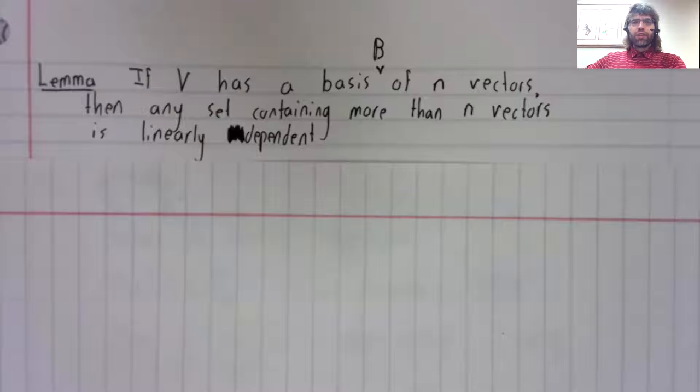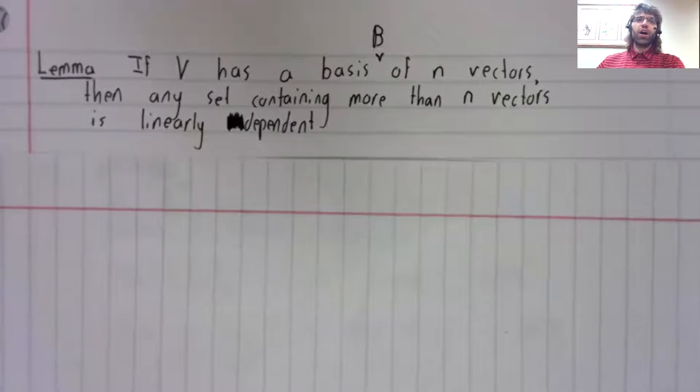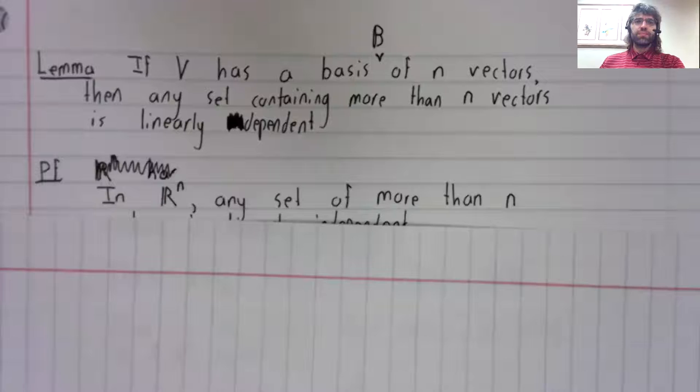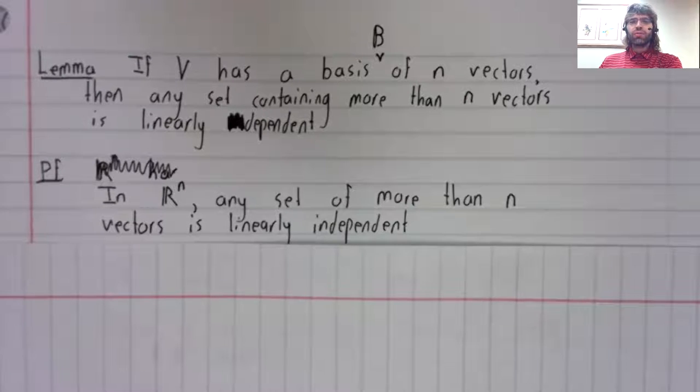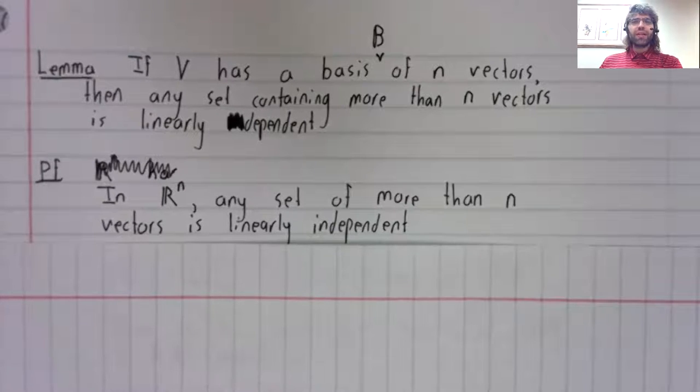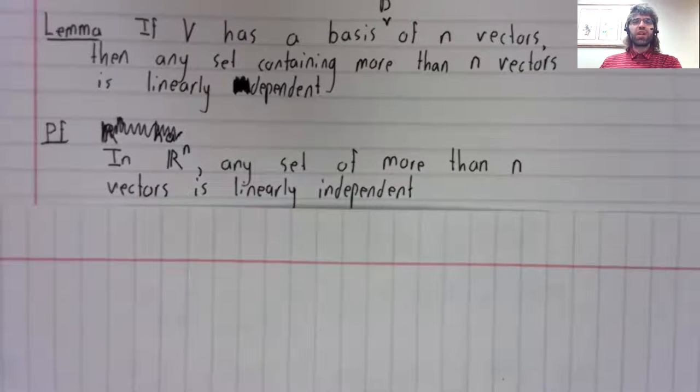I give a very formal proof of this in my notes, but the formality risks concealing the actual argument, which is as follows. In R^n, any set of more than N vectors is linearly independent. We proved that when we first discussed linear independence.